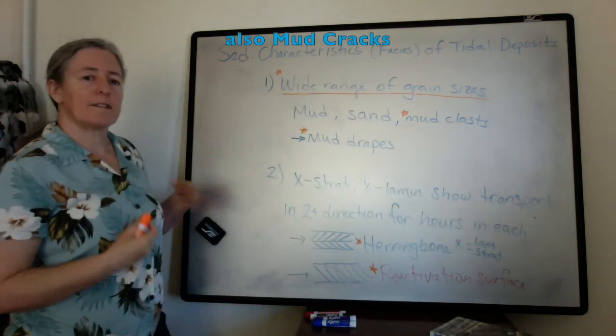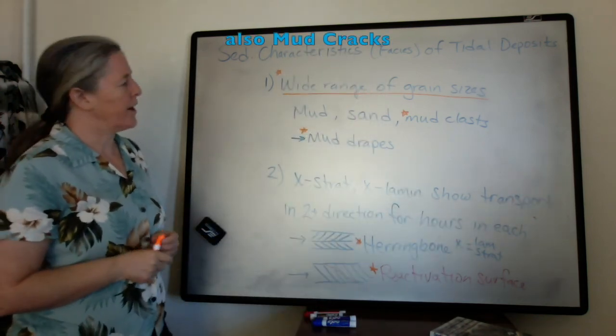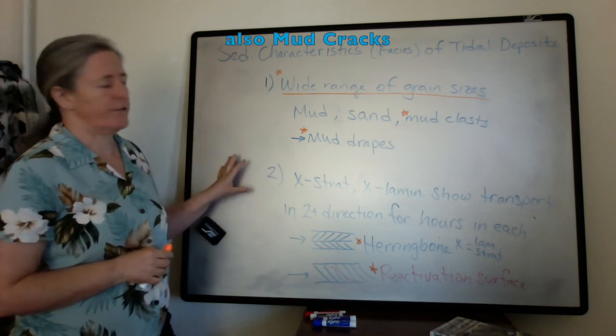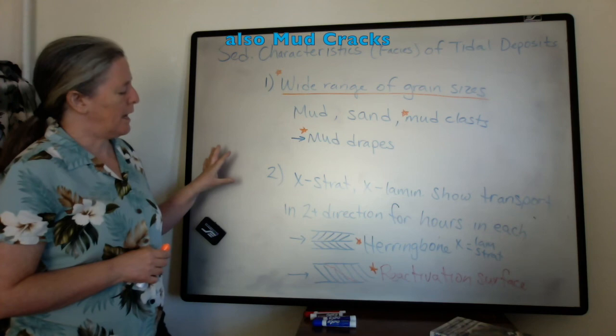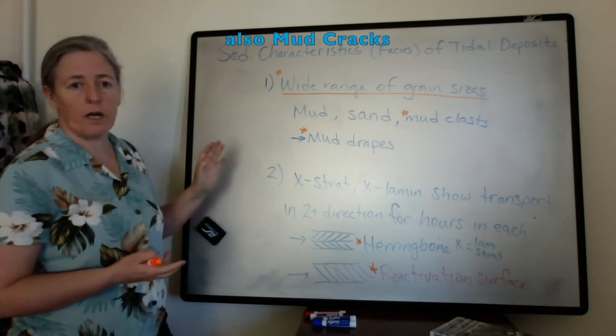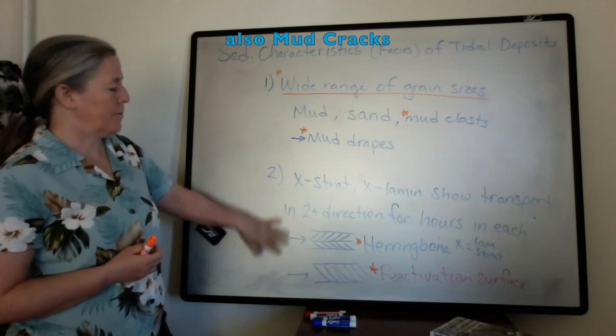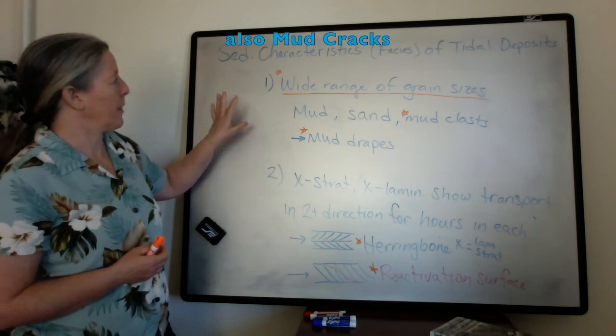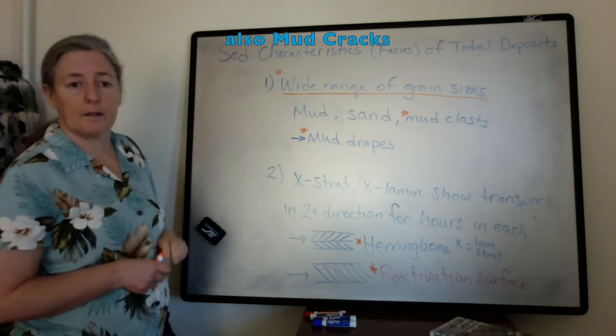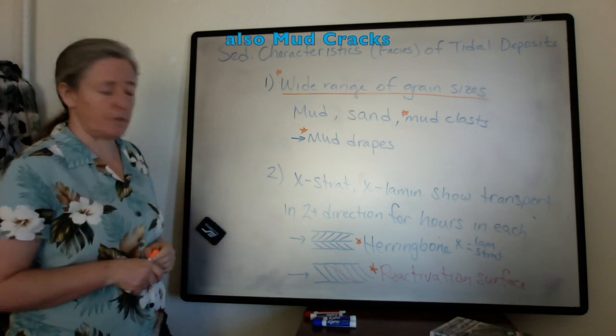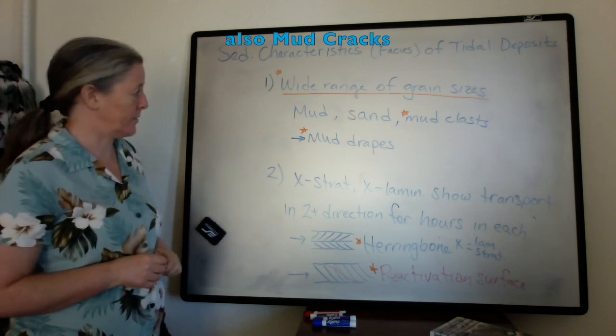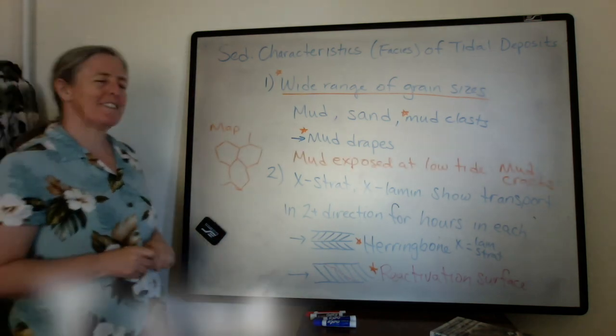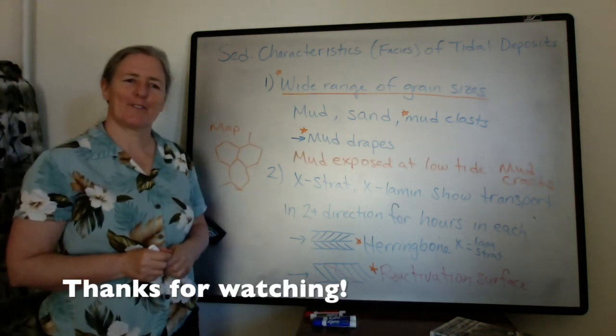So each one of these can be produced in other environments, but they are very common in tidal environments. So if you look at a sequence of rocks that has many of these features, a reasonable interpretation would be that it reflects tidal deposits. So tidal facies are quite distinctive, and thanks for watching.